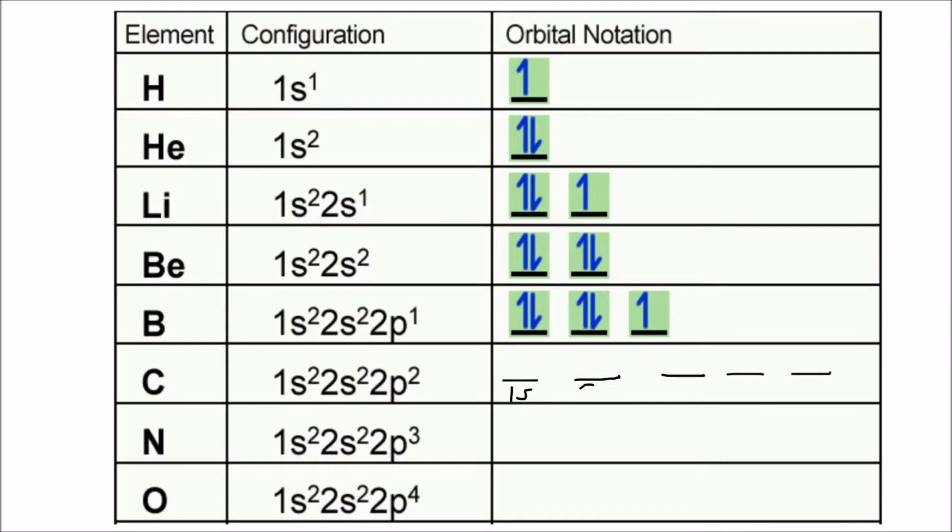It's perfectly fine to bracket and call that 2p. We have two electrons in the 1s orbital. We have two electrons in the 2s orbital. And we have two electrons in the 2p orbital. So does it look like this? Is that right? No, that's not right. That is breaking Hund's rule.